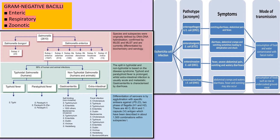Gram-negative bacilli can be enteric, respiratory, or zoonotic. Important enteric bacteria associated with the GIT include E. coli, Salmonella, Shigella, Vibrio cholerae, Campylobacter jejuni, Klebsiella, and H. pylori. E. coli causes UTI, traveler's diarrhea, and neonatal meningitis. Salmonella causes typhoid fever, enterocolitis, and osteomyelitis or septicemia in sickle cell anemia patients. Shigella causes bloody diarrhea, Vibrio cholerae causes watery diarrhea, H. pylori is associated with stomach cancer, gastritis, and peptic ulcer. Klebsiella pneumoniae causes pneumonia in alcoholics or diabetics and hospital-acquired UTI.